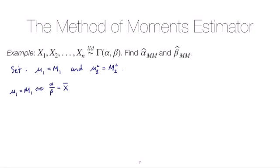X bar is always the sample mean and this would suggest that we can set alpha equal to beta times x bar.